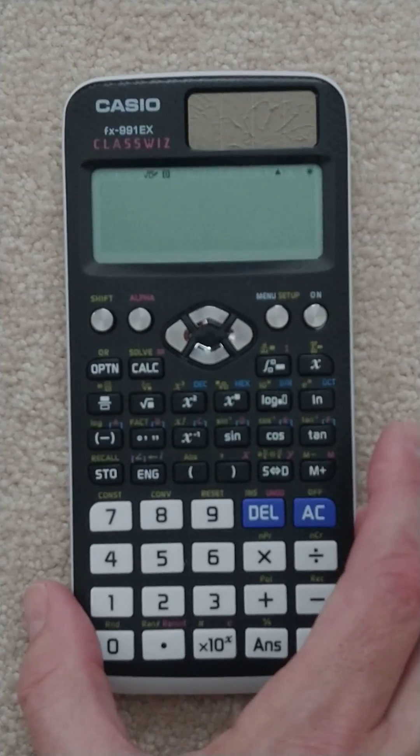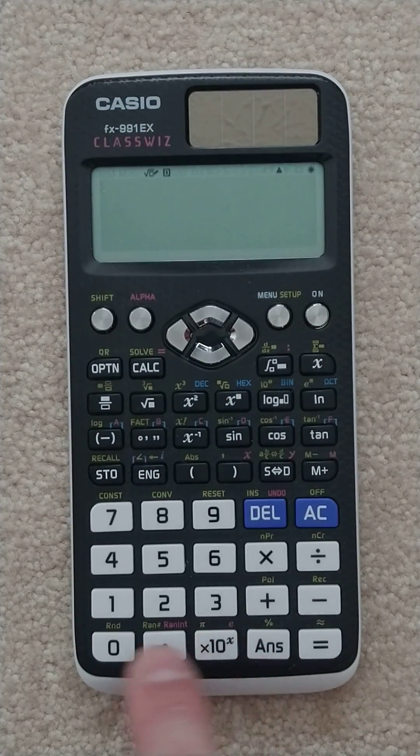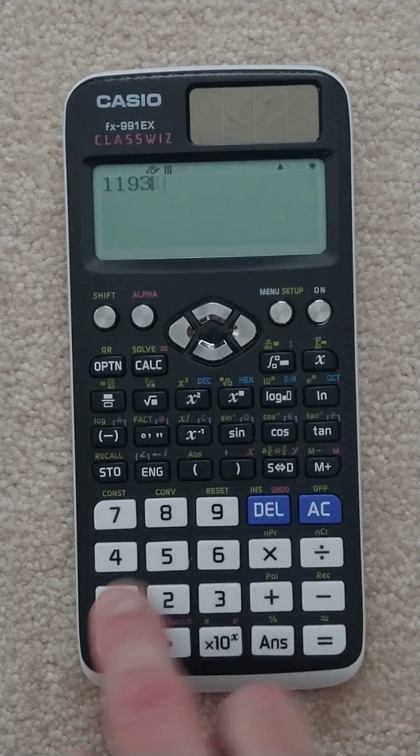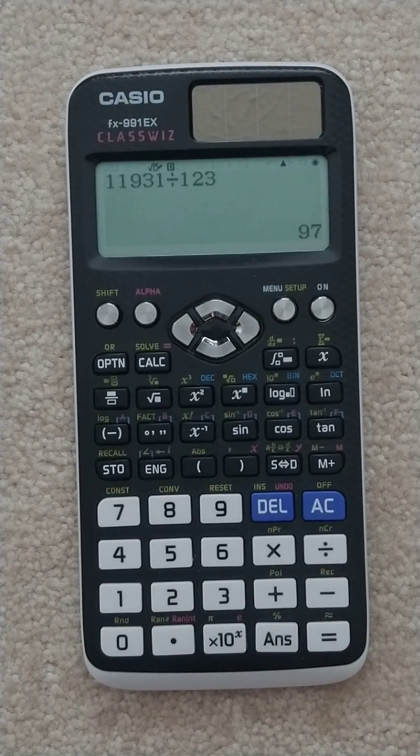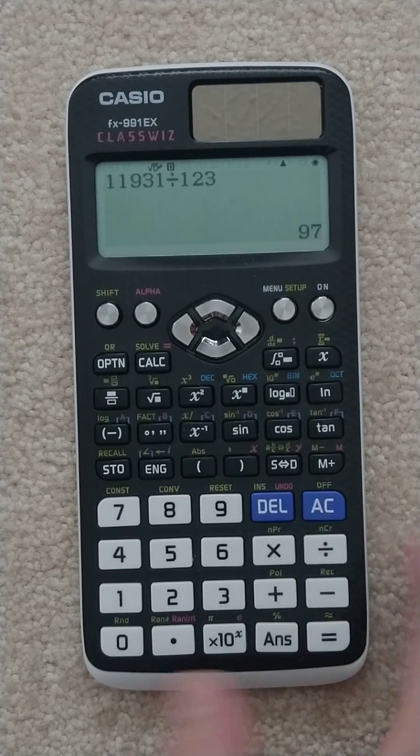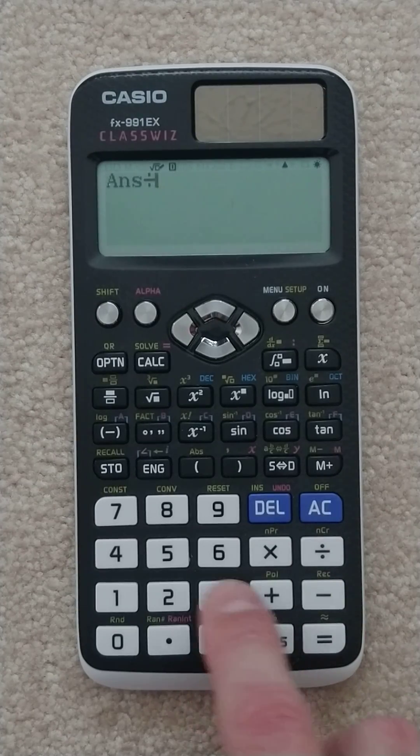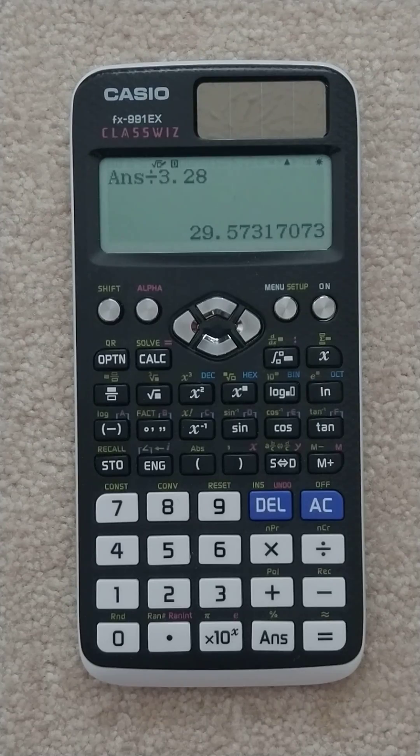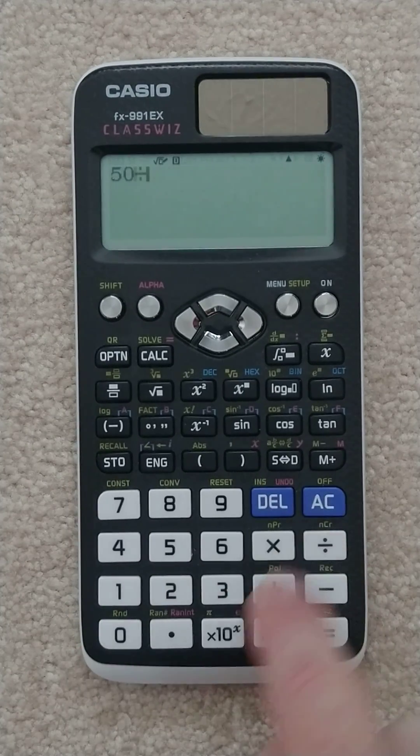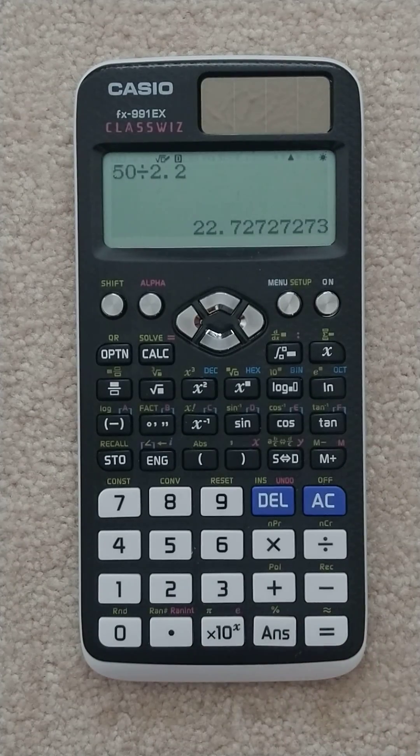And lastly, let's do it on the Casio. We do 11,931 divided by 123. We get our 97. Let's divide that by 3.28. That's our velocity. Now let's do our 50 divided by 2.2. And our mass.